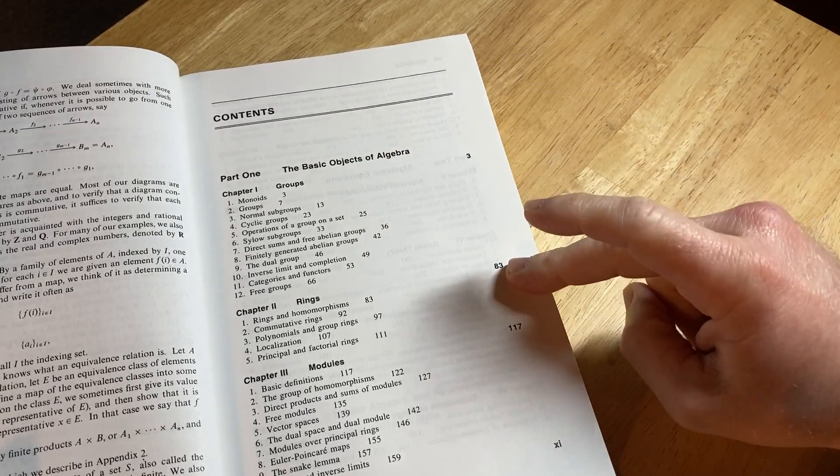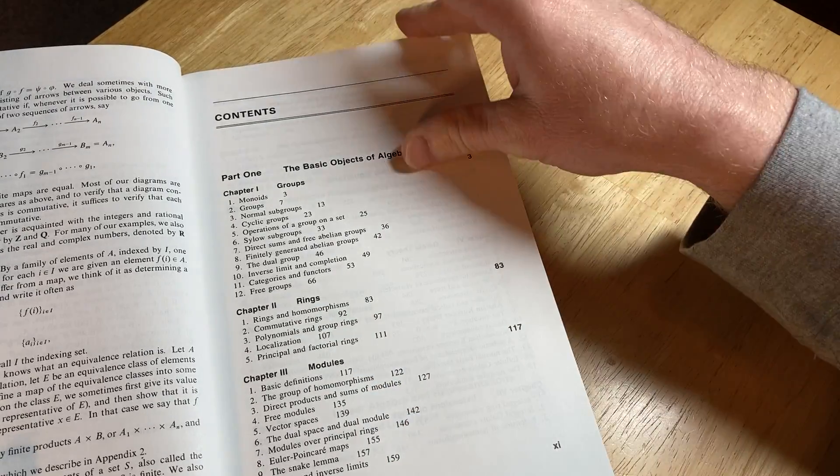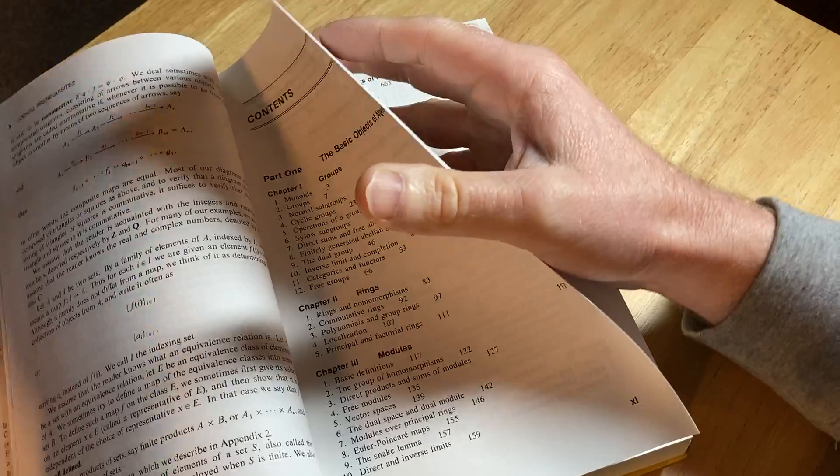Here's page 3, here's page 83, and then you're on rings, and then on page 117 you're on modules. So you're moving very, very quickly in this book. I want to emphasize that.